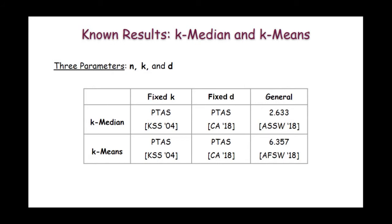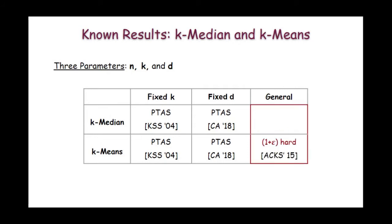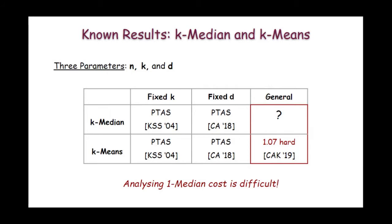Now the question is: can we obtain a PTAS for the k-median and k-means problem in the general case? In 2015 it was shown that the k-means problem is hard to approximate within some constant factor, and this factor has been recently improved to 1.07. However, no such result is known for the k-median problem, and this is because the 1-median cost is difficult to analyze.